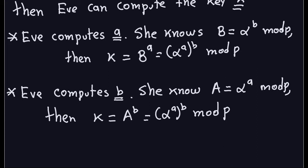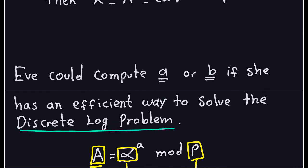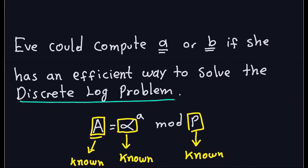So in either case, if Eve can compute lowercase a or lowercase b, she will know the shared key, which is not good. One way she could do that is if she has an efficient algorithm to solve the discrete logarithm problem. If she can compute the discrete log efficiently, she can easily compute either a or b.